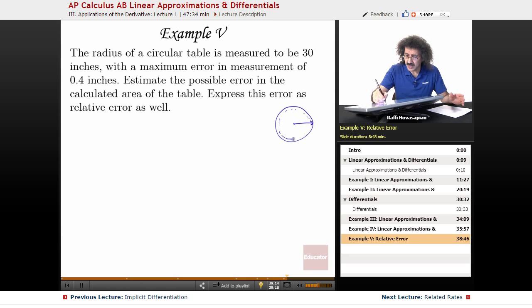With a possible error of 0.4 inches, which means it could be 29.6 or it could be 30.4. So it might actually be slightly smaller or slightly bigger. What's the possible error in the calculated area of the table between the 30 plus the 0.4, the 30 minus 0.4? What's that possible error?